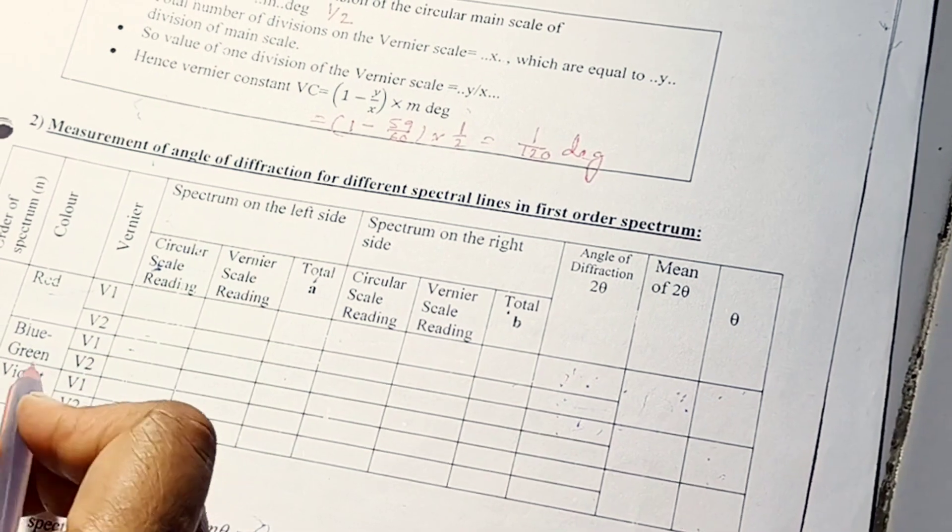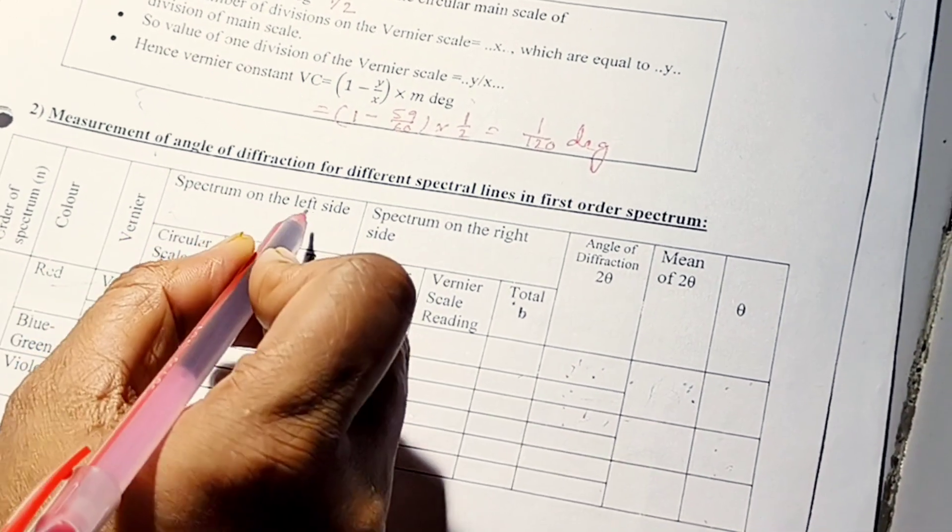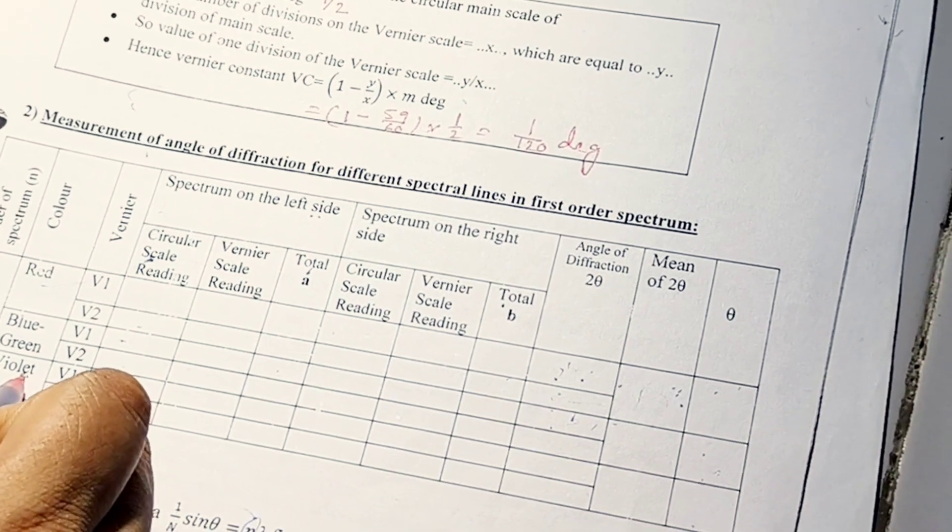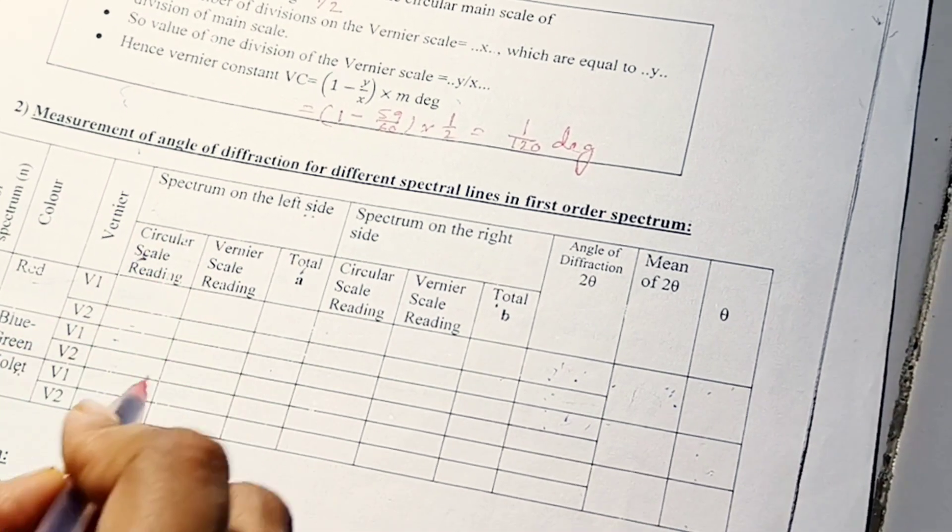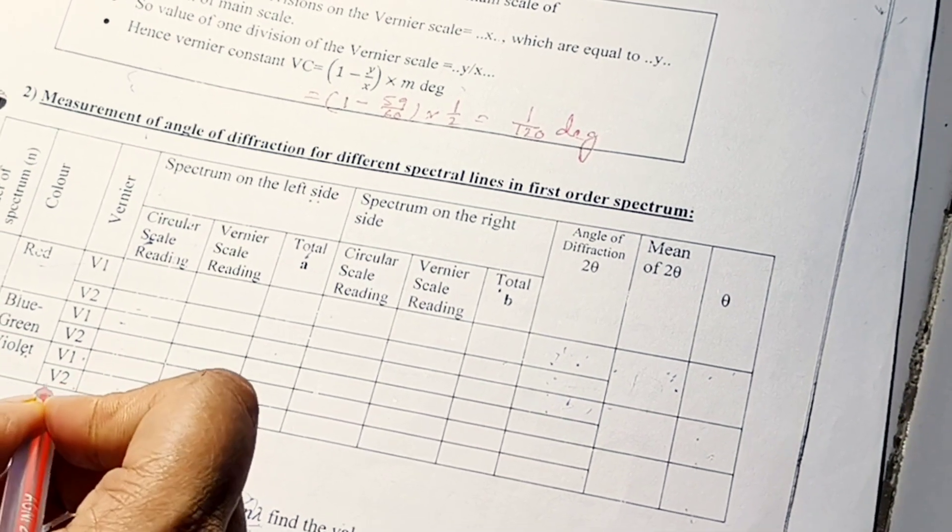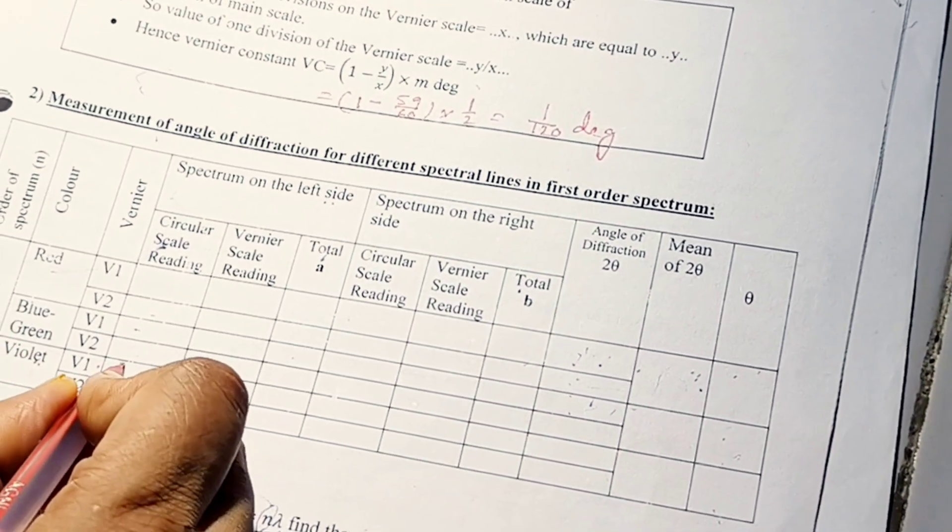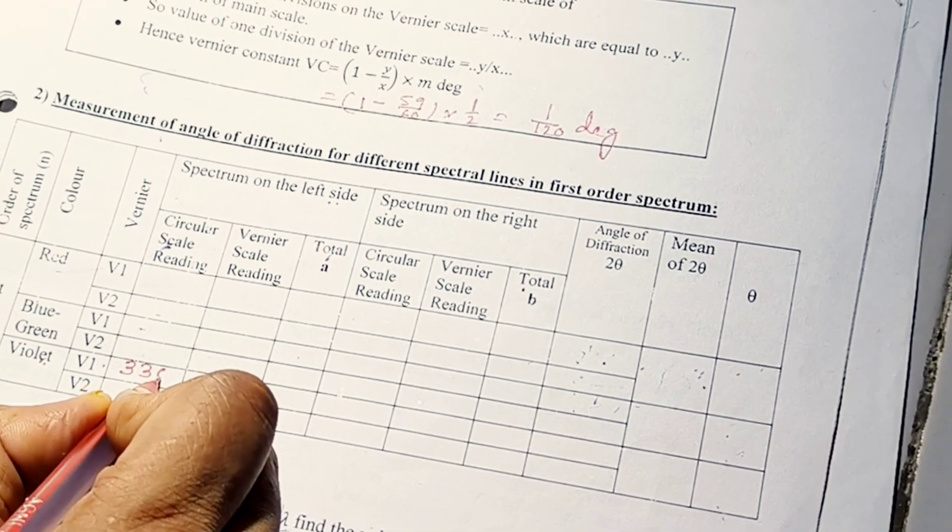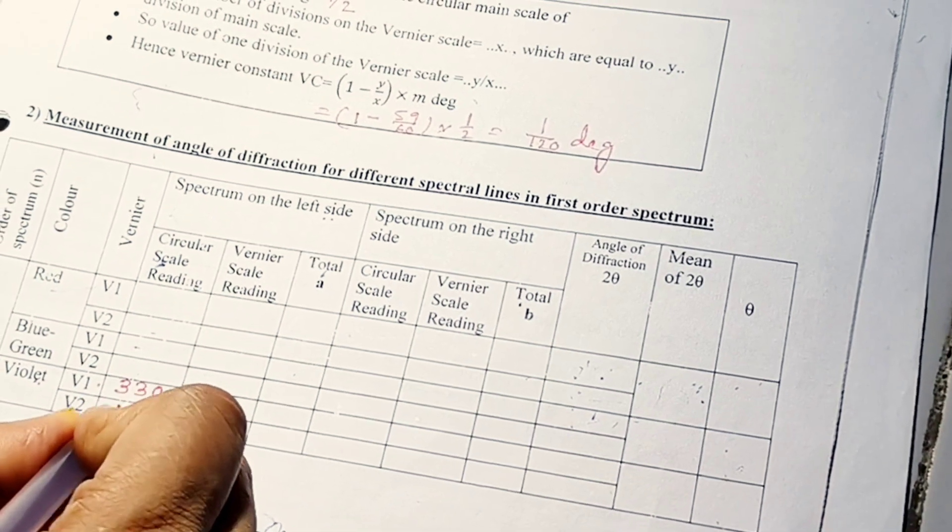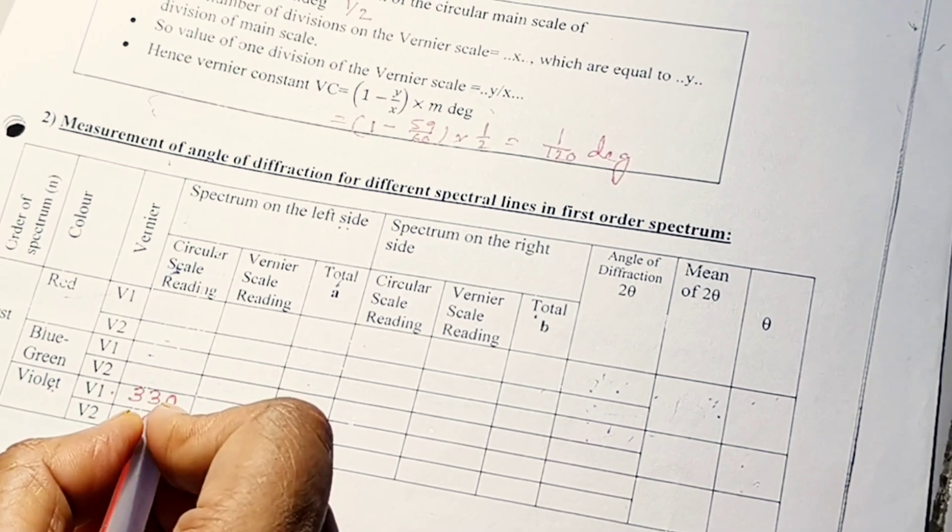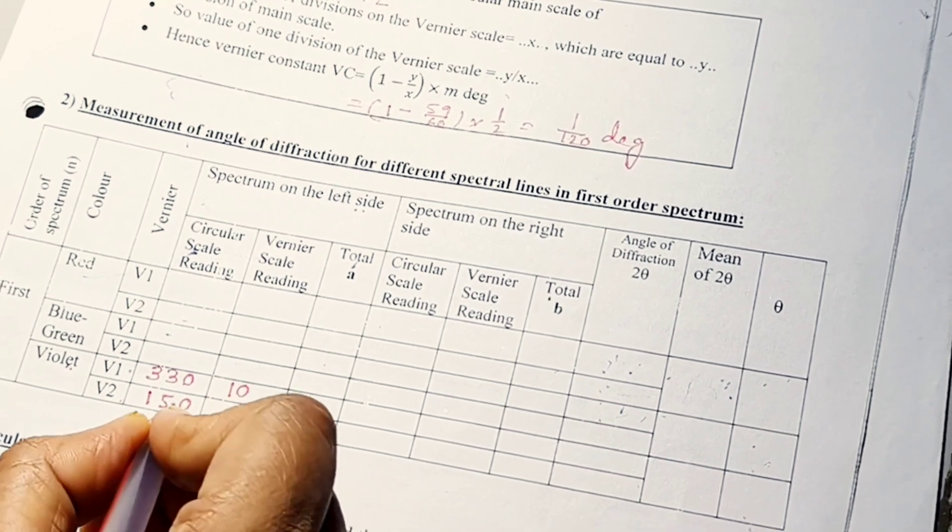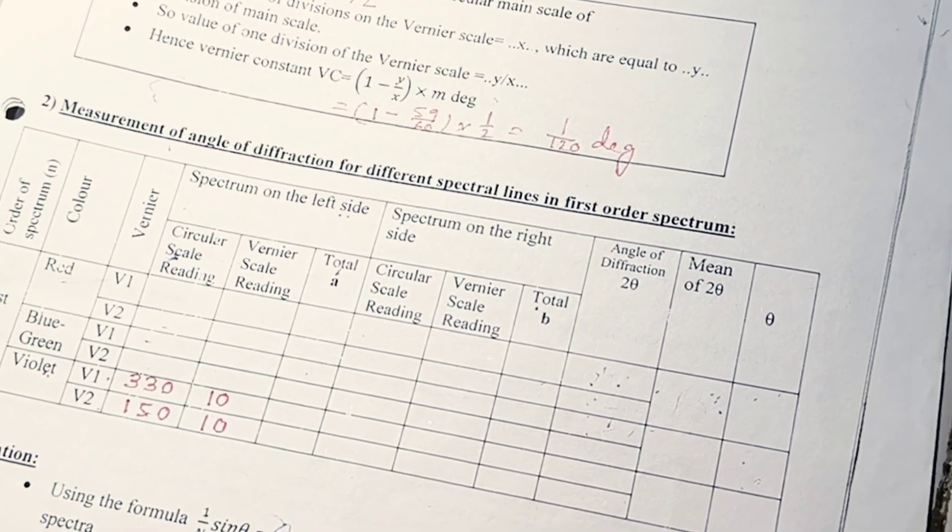So, now I have taken violet color for left side. Spectrum on left side and the color I have taken violet color. We have already discussed that we have to take V1 as well as V2. Vernier 1 and Vernier 2. Vernier 1 I have seen 330 and Vernier 2 I have seen circular scale reading I have seen 150. Now, 330 for Vernier scale reading I have seen 10 and 150 also I have seen 10.